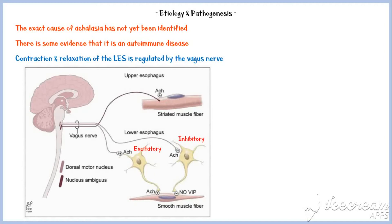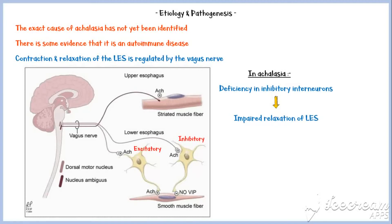In normal individuals, the function of the lower esophageal sphincter is controlled by a balance between the nerve signals through these excitatory and inhibitory interneurons. However, in achalasia, there is a deficiency of inhibitory interneurons, which leads to impaired relaxation of the lower esophageal sphincter.